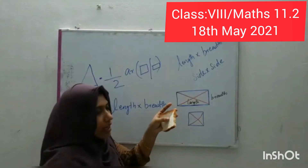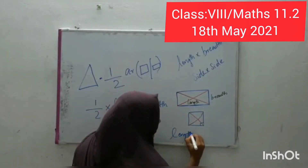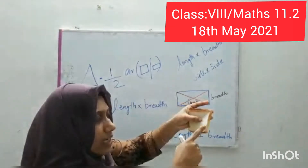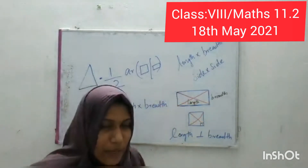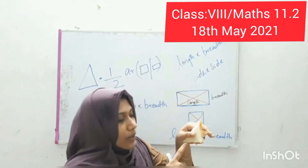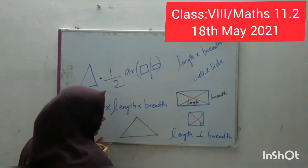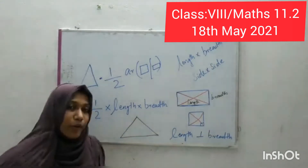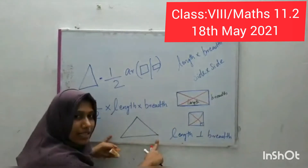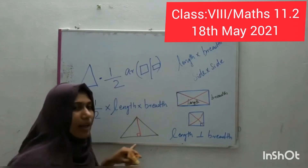This is a portion of a square, so this angle is 90 degrees. Length and breadth are perpendicular to each other. When we take one side as length, the perpendicular side to length is the breadth. For a triangle like this, when we take one side as length, the breadth will be the perpendicular to that length.